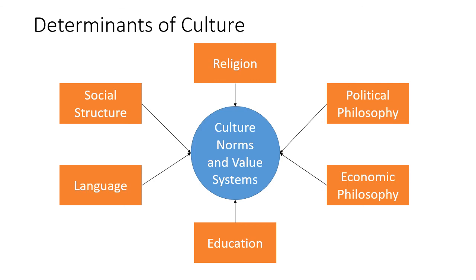So what determines a culture? The norms and value systems of a culture are generated by established religion in a particular area, political philosophy, the philosophy of the economic system, the educational system, language, and the social structure of how things are put together. In the next segment of this lecture we'll talk more about these different elements and bring in some of the international differences between various cultures.